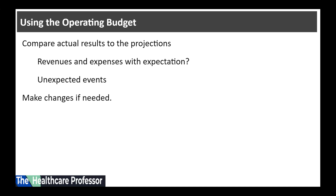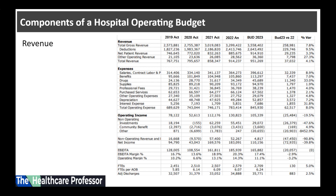What are the components of a hospital operating budget? The most common components of a hospital operating budget are revenue, expenses, and forecasted operating income.